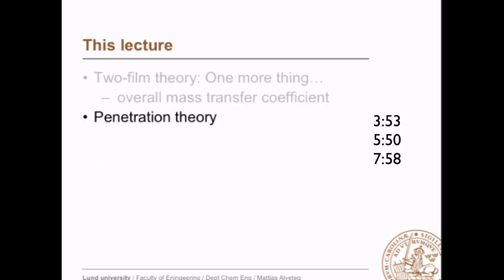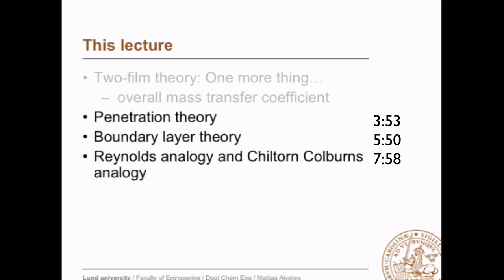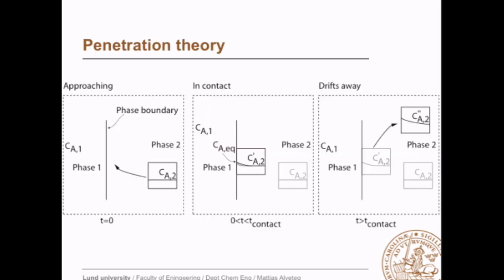So we're done with the two-film theory. Time to do the penetration theory, boundary layer theory, and Reynolds analogy. Penetration theory first.